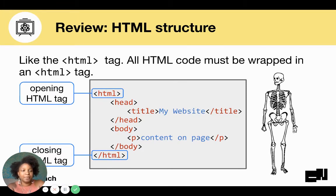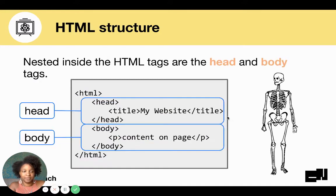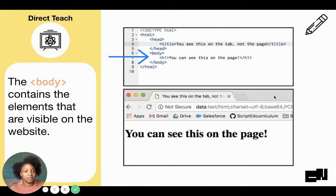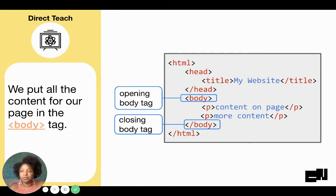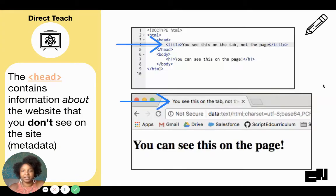Remember, HTML is the structure of our website — it's the skeleton. And just like a skeleton, HTML includes a head and a body. Remember, anything inside of the head does not show up on the page. The body contains the elements that are visible in the website, and we put all the content for our page in the body tag. We will be able to see content on page — those sentences show up in the P tag in the body.